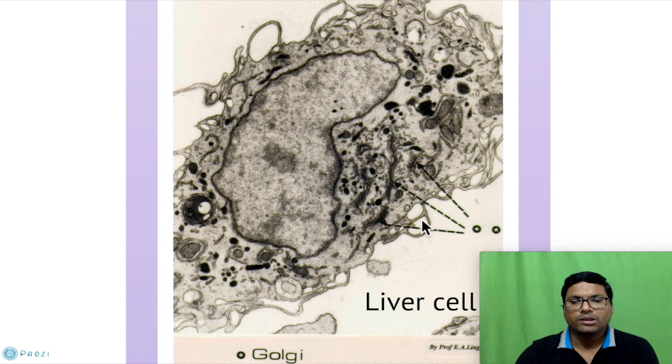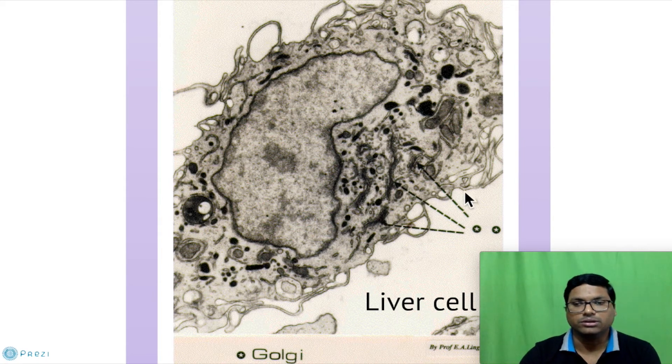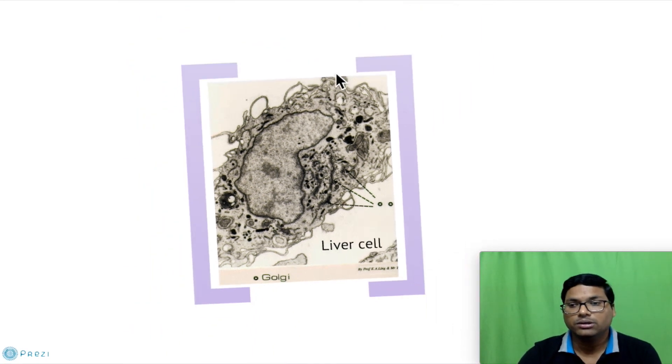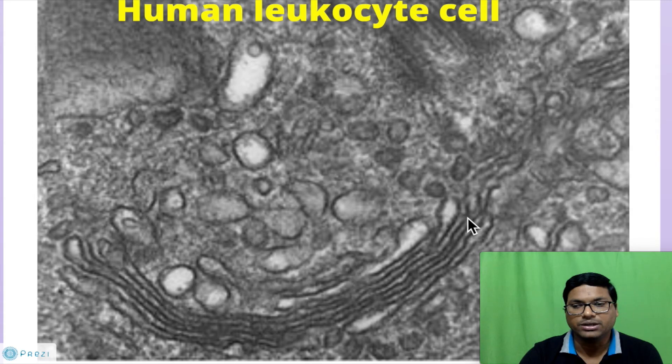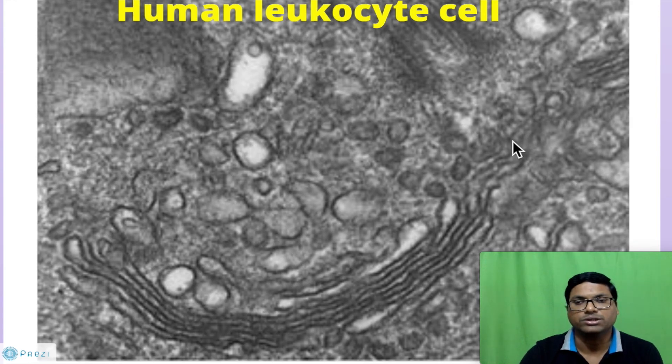As you can see, the presence of Golgi in liver cell—see how the Golgi complex is present in the liver cell with a very big nucleus. And in the human leukocyte cell, you can see the arrangement of Golgi. It's very long with cisternae having larger surface area and larger vesicles. Human leukocyte cells are highly active and involved in the immune system.